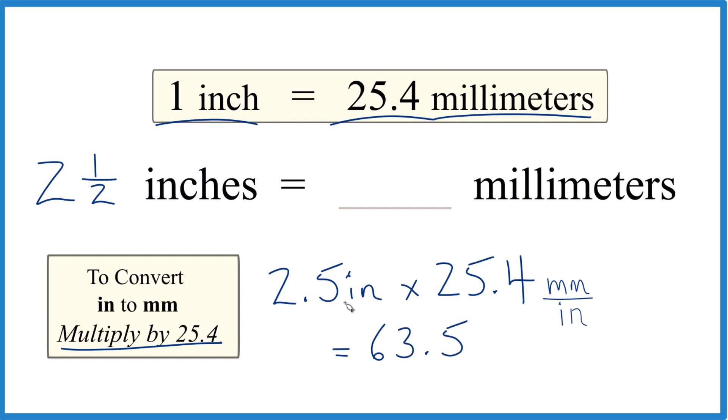So that's our final answer here: two and a half inches, or 2.5 inches, is 63.5 millimeters. That's how you do it.